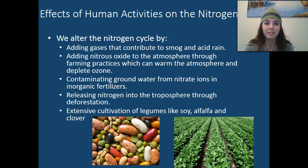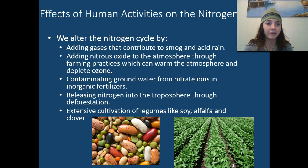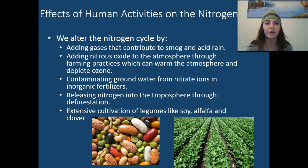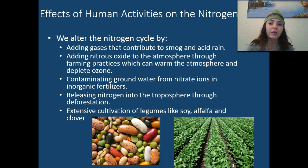What type of effects do human activities have on the nitrogen cycle? We alter it in many different ways. We add gases that contribute to smog and acid rain. We add nitrous oxide to the atmosphere through our farming practices, which can actually warm the atmosphere and deplete the ozone layer. We contaminate groundwater with all of the fertilizers we use to grow our agricultural crops. And we release nitrogen into the troposphere through clear-cutting or deforestation, and through our extensive cultivation of legumes such as soy, alfalfa, peanuts, and clovers.